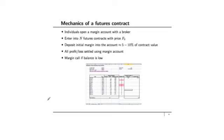Here is how a futures contract works. An individual opens a margin account with a broker and enters into a certain number of futures contracts with a certain price F0, which is the futures price available at time t equal to zero. In order to enter into these futures contracts, you have to set up an initial margin that depends on whether you're a hedger or a speculator, and it typically is around 5 to 10% of the total contract value. All the profits and losses are settled using a margin account. If there are profits — meaning the futures price goes up and you have a long position — the profit is credited to your margin account. If the price goes down, the losses are settled through the margin account. If the margin falls below the maintenance margin, there is a margin call and you must restore the account to the initial margin.